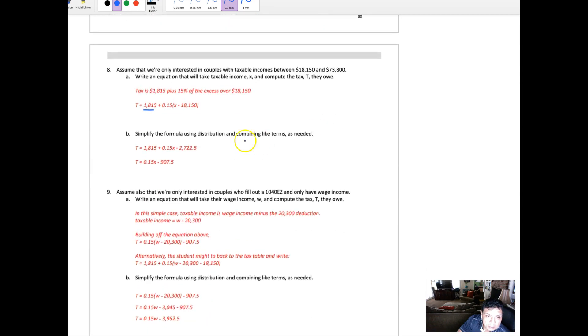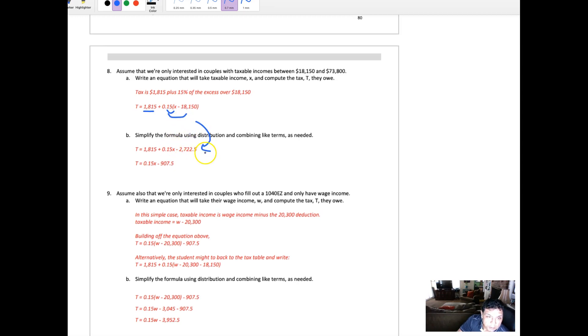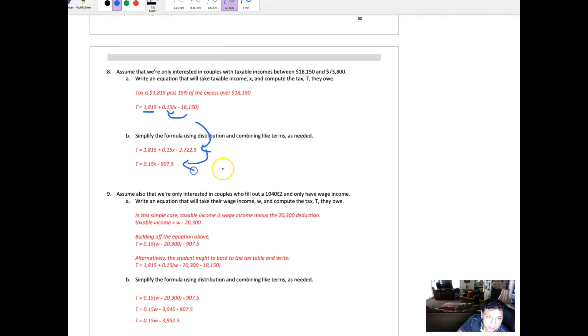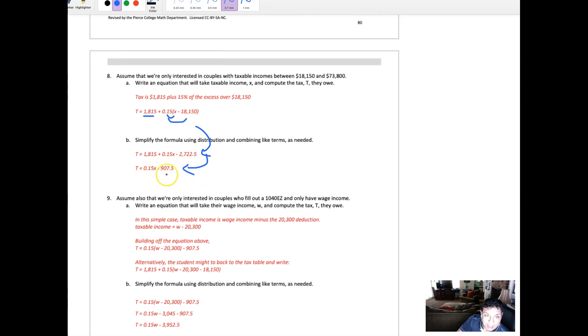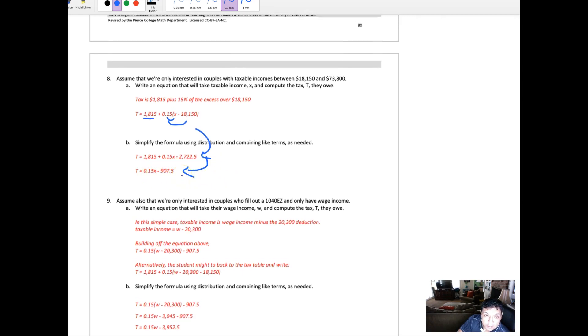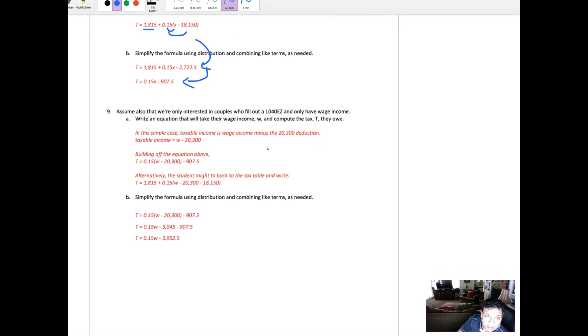So compare that to the original one here. You can simplify this formula if you distribute and then you end up getting what's down here when you distribute that, which gives you that right there. That becomes the actual formula you would use to determine the tax you owe after you distribute and combine like terms.